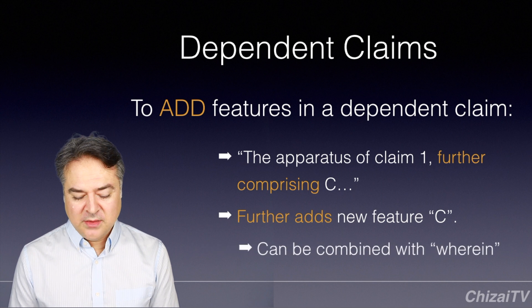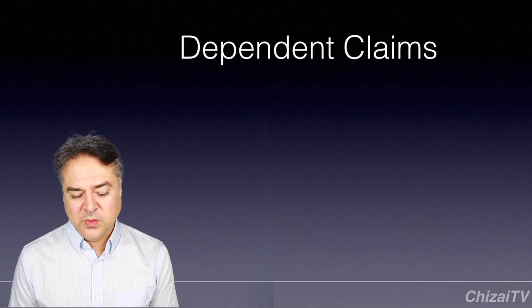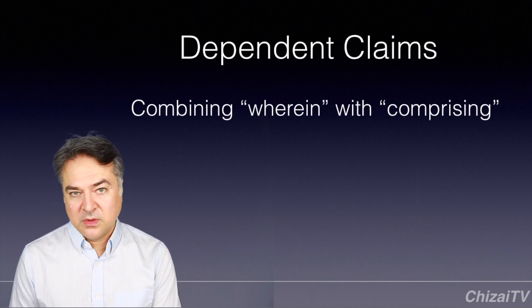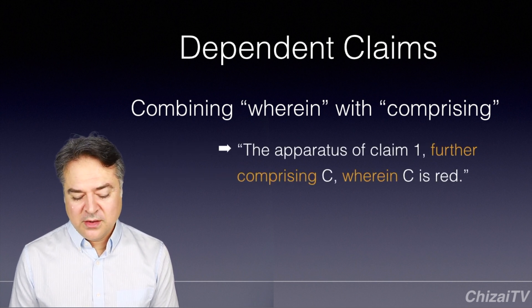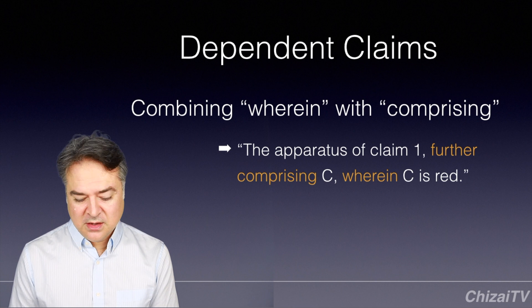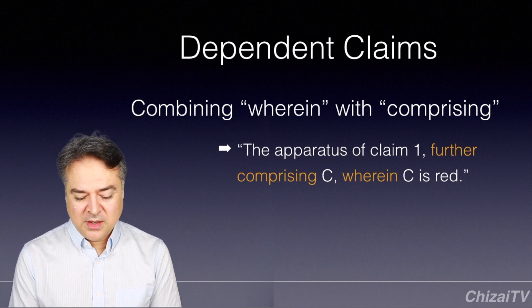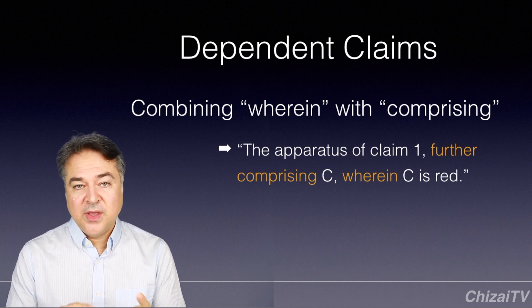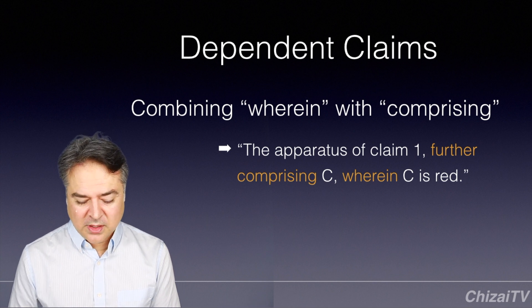You can combine this language with wherein as well. In the dependent claims, if we want to combine wherein with comprising, we can say: 'the apparatus of claim 1, further comprising C, wherein C is red.' So in this claim, we added the new element C using further comprising, and then we also defined that C is red by using wherein.